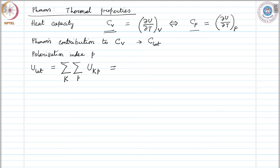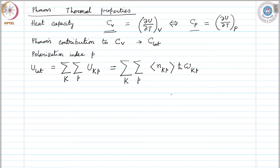What is u_{k,p}? The summations remain as before — sum over k and sum over p — and u_{k,p} is given as the average number of phonons, with wave vector k and polarization index p, times h-bar omega_{k,p}. This gives us the lattice contribution to the energy, where the average n_{k,p} is the average number of phonons at thermal equilibrium for wave vector k and polarization p, and this can be obtained from the Planck distribution function.